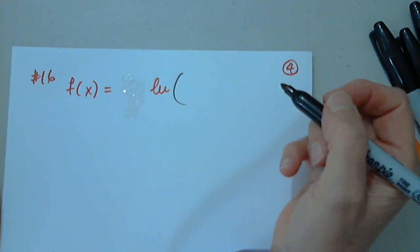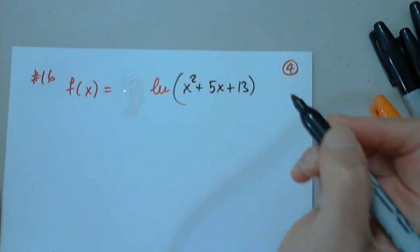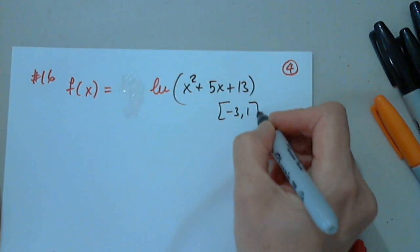The natural log of the value of x squared plus 5x plus 13. Good. Interval is negative 3 to 1.